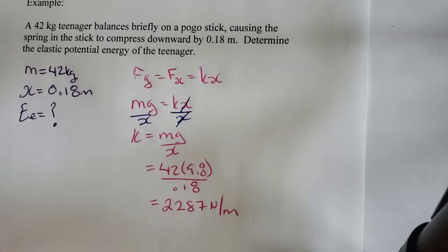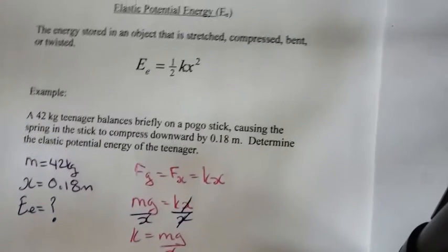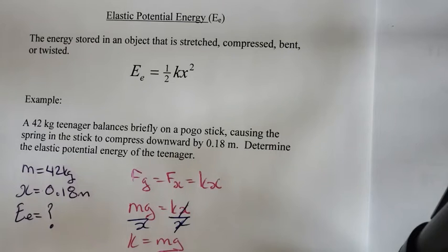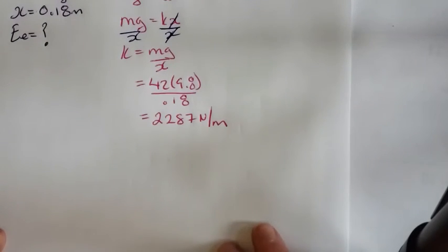Now that we know what our K value is, we can actually use this formula here, a really simple formula, to calculate what EE is. So let's do that.